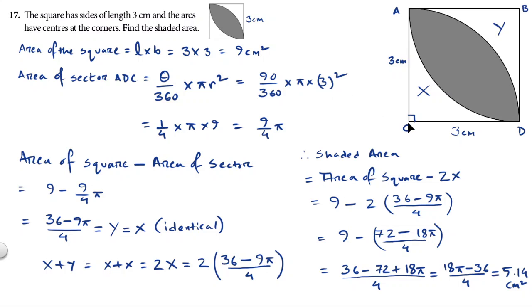So radius is 3. From this center, CD is the radius, so 3 square. And it comes down to 1 by 4 multiplied by pi times 9, or you can say 9 by 4 pi. So that is the area of the sector ADC.